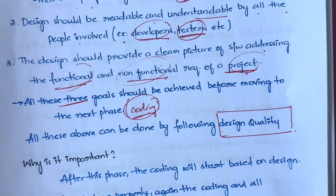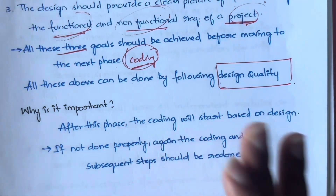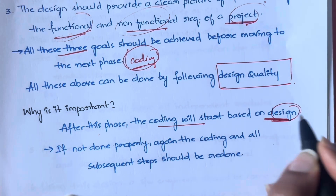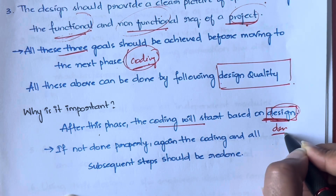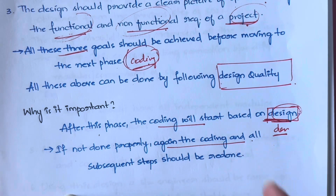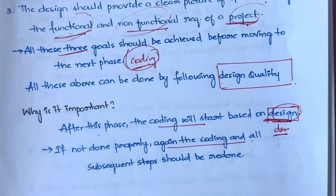Why do we need this process? You could just take a Word document or a PowerPoint presentation and start designing — why keep so many principles in mind? Because after this phase, coding starts based on the design given to the developer. If the design is not done properly, all the coding work and every step done up to that point has to be repeated. That is why this step is very important.